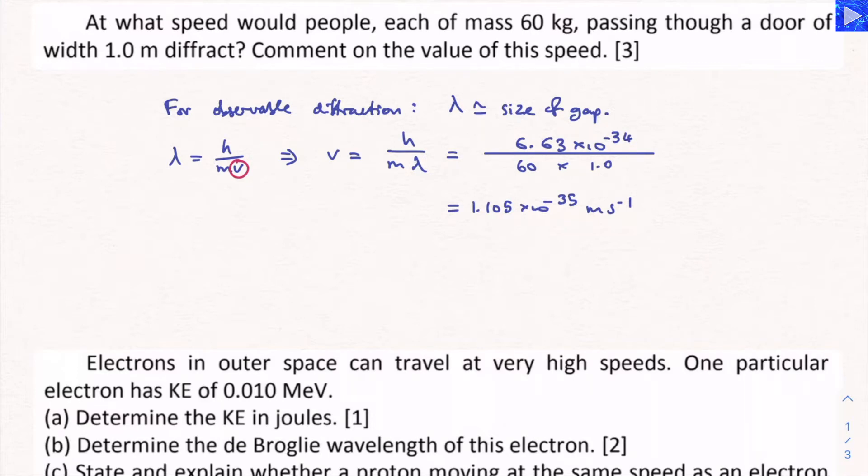we will get 1.105 times 10 to the minus 35 meters per second. Well, the 2SF value is 1.1, so you just state that. So 1.1 times 10 to the minus 35 meters per second. All right, that's the speed. So that's the second mark there doing that calculation.